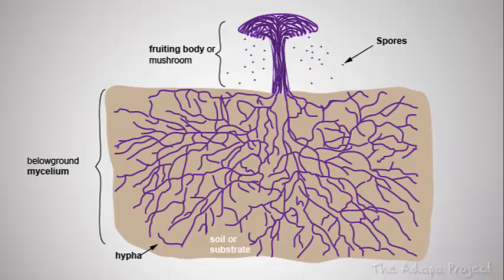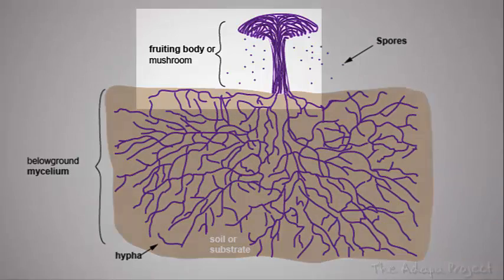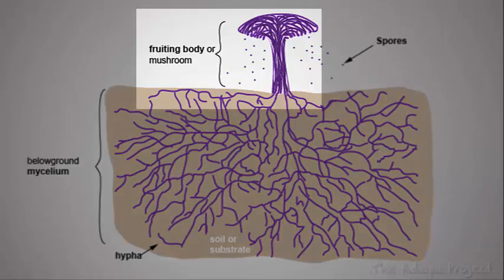Only when fungi decide to reproduce sexually, they form a structure called a fruiting body. This often has a stalk and a cap, and this is what we eat on our pizza or in soup — the typical mushroom.